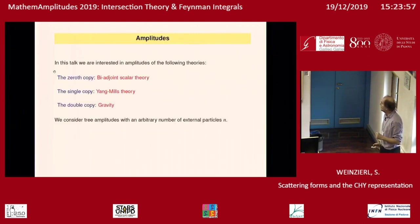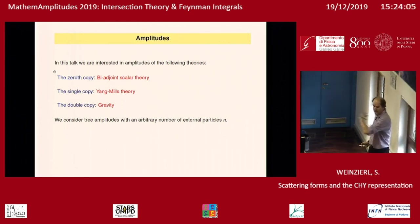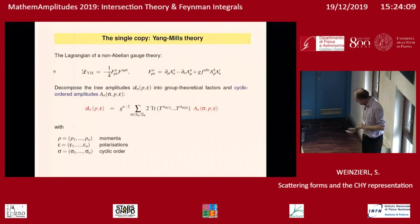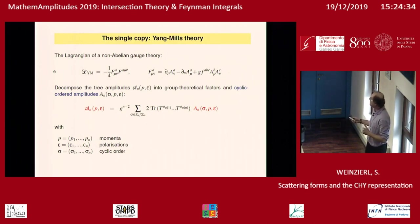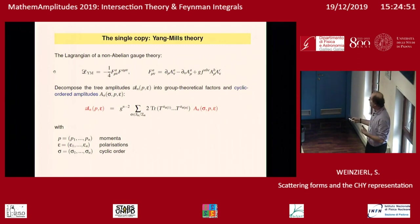Let's start with the middle one: Yang-Mills theory. I will consider an arbitrary number of external particles, denoted N. Yang-Mills theory is given by a Lagrangian, and if we write down the tree amplitude, it depends on the momenta of the external particles and on the polarizations — the spin. There is a standard procedure to rewrite it as a linear combination where we take out explicitly the color factors — the SU(N) or U(N) color factors — combined into traces. The color matrices can appear in different orders, defining a cyclic order, and the coefficient multiplying this color structure we call a partial amplitude.